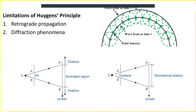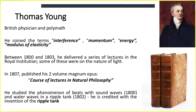That had to wait a hundred years. The wave theory went to sleep mainly because Isaac Newton's ideas prevailed — he believed light was made up of a stream of particles, not waves. A hundred years later, a British physician and polymath named Thomas Young came along. He coined the terms interference, momentum, energy, and modulus of elasticity. Between 1800 and 1803, he gave a series of lectures on the nature of light, compiled into two volumes called Natural Philosophy. He's also credited with the invention of the ripple tank.